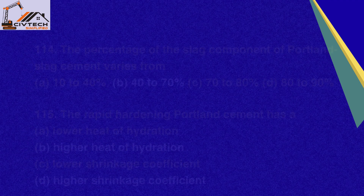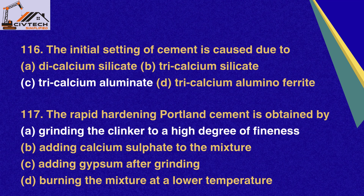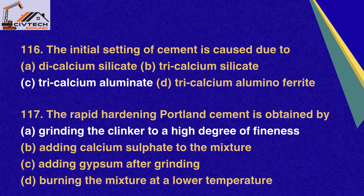Question 116. The initial setting of cement is caused due to: A. Dicalcium silicate, B. Tri-calcium silicate, C. Tri-calcium aluminate, D. Tri-calcium alumino ferrite. Correct option C: Tri-calcium aluminate. Question 117. The rapid hardening Portland cement is obtained by: A. Grinding the clinker to a high degree of fineness, B. Adding calcium sulfate to the mixture, C. Adding gypsum after grinding, D. Burning the mixture at a lower temperature. Correct option A: Grinding the clinker to a high degree of fineness.